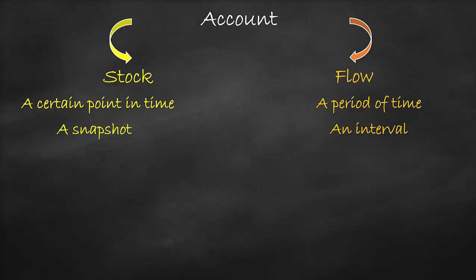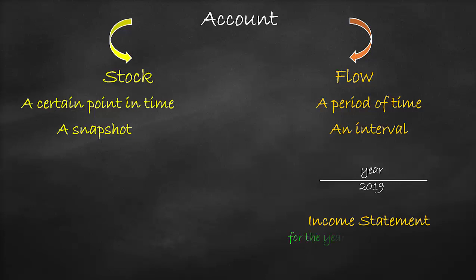The flow account is measured over a period of time. For example, a year. The income statement is an example of this, as it shows the revenues and expenses during the entire year, not a single day. And that's why we write the income statement as 'for the year ended June 30th, 2019,' for example, as it reflects the total revenues and expenses during the year.